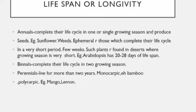Annuals are plants which complete their life cycle in a single favorable season and produce seeds. They are benefited in two ways: firstly, they pass over the unfavorable season in the form of dormant seeds; secondly, the plant spreads quickly by producing seeds every year. Examples are sunflower and many types of weeds.